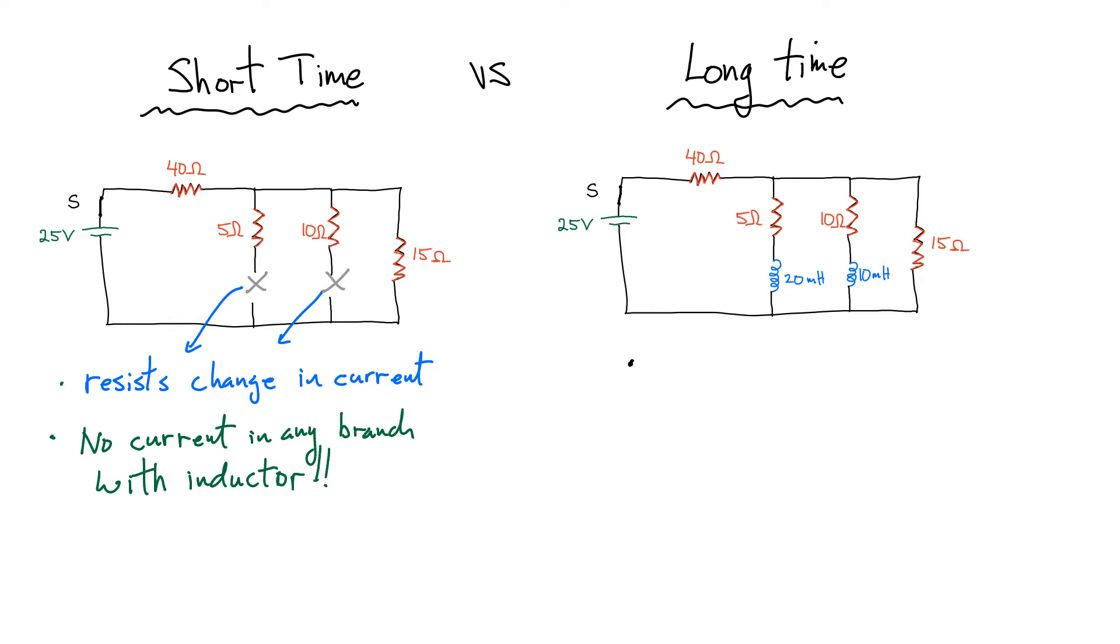After a long period of time, we can basically replace our inductors and simply replace them just by regular wires. Now this is also a very easy problem because you can just apply your loop rules and solve for the current in each of these branches. After a long period of time, simply replace inductors with just wires. In principle they are just wires, you've just wrapped a wire around a coil,